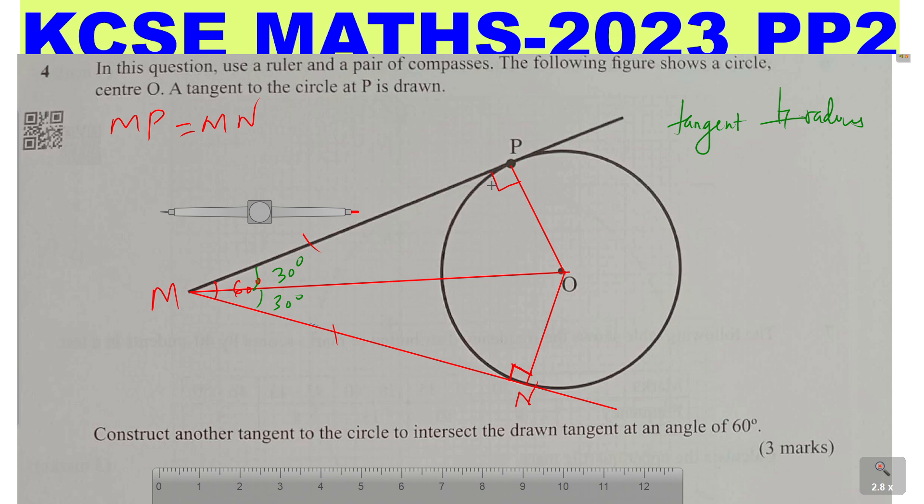Since this is 90 degrees, consider triangle PMO. The sum of angles should be 180. So 90 plus 30, that will be 120. So this angle that is here should be 60 degrees.